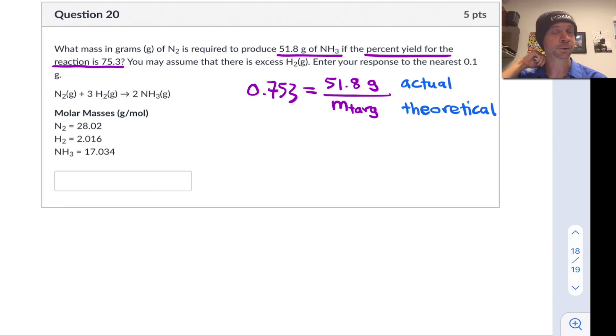And so mathematically we can set this up using the definition of percent yield as you see here. 75.3 percent corresponds to a decimal value of 0.753. And that's equal to the actual yield divided by the theoretical yield.